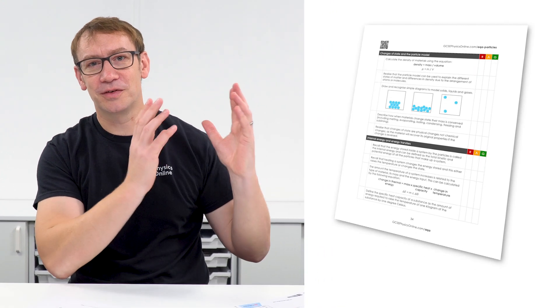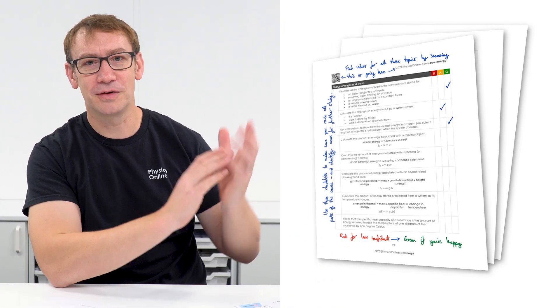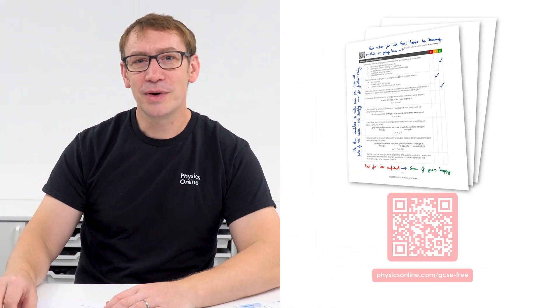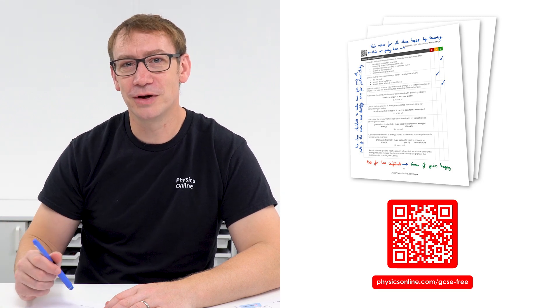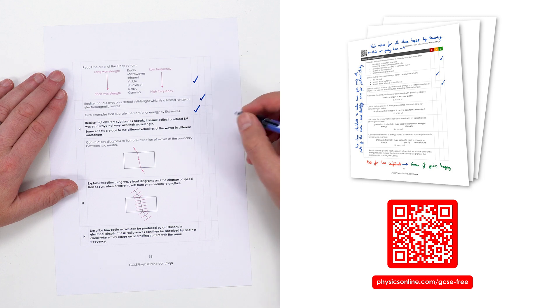Once you know that, you can use a checklist to make sure you've covered everything in the exam board specification. I've got some specific to GCSE physics on my website. This means you can work through it methodically, point by point, and tick off material you're happy with so you don't need to spend much time on it.